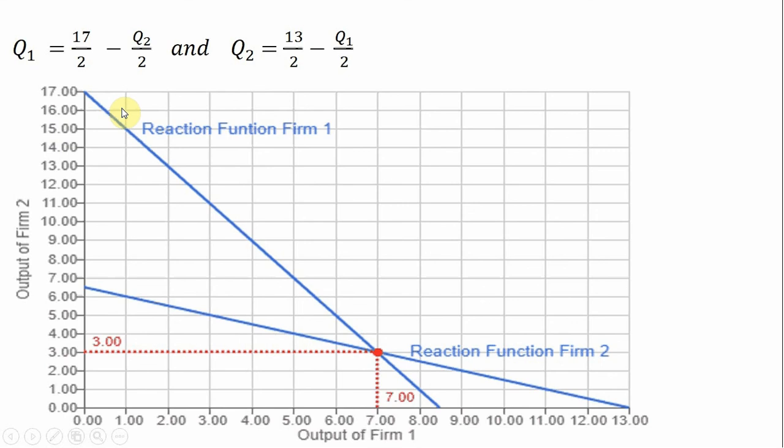So to do that, the first thing we'll do is we'll plug in 0 for Firm 2's output. So if Q₂ is 0, we'll go ahead and solve this. And we see that Firm 1 would produce 17 divided by 2 or 8.5 units. So if Q₂ is 0, Q₁ is 17 divided by 2 or 8.5. And that's this horizontal intercept down here.